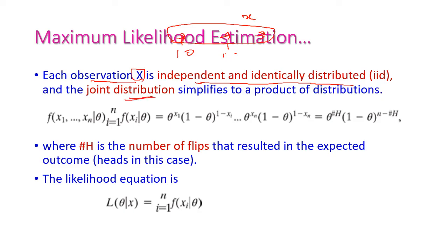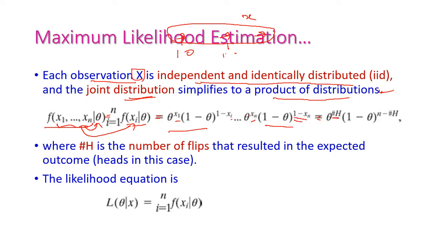The joint distribution simplifies to the product of distributions. That is, f of x1 to xn given theta is equal to the product from i equals 1 to n of f of xi given theta. This simplifies to theta to the power xi into 1 minus theta whole power 1 minus xi, and so on, up to theta to the power xn into 1 minus theta whole power 1 minus xi, which equals theta to the power hash-i into 1 minus theta whole power n minus hash-i. This is the simplified formula.